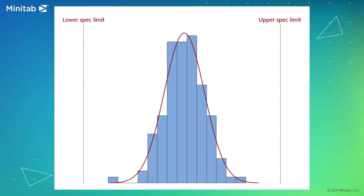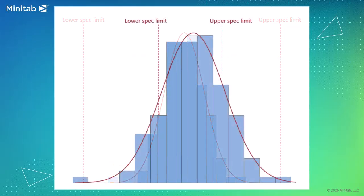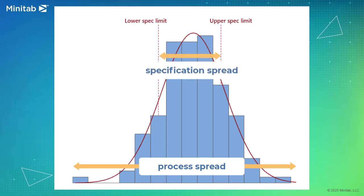When a process is capable, the process spread is smaller than the specification spread. When a process is not capable, the process spread is larger than the specification spread.